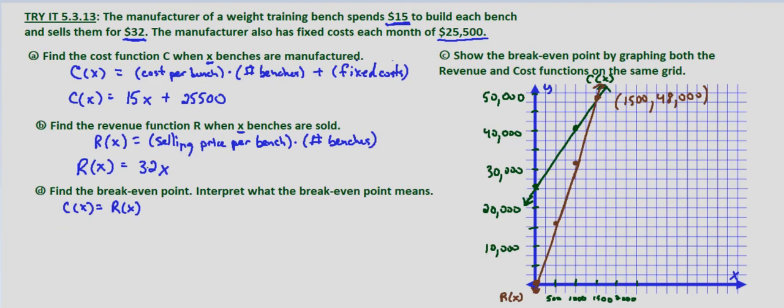I'm going to switch it around since 32 is greater than 15. So this would be R of X equals C of X. And now we substitute: 32X equals 15X plus 25,500.